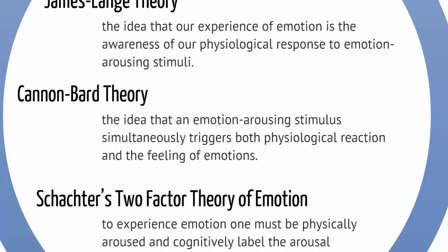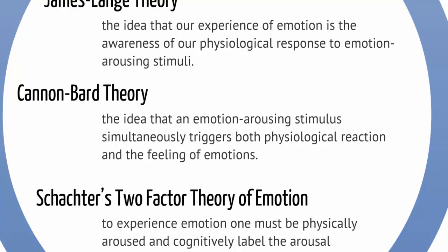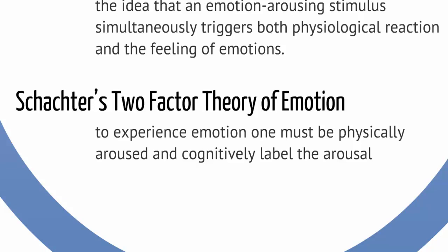The Cannon-Bard theory suggests that emotion-arousing stimuli simultaneously triggers our physical reaction and the feeling of that emotion. Schachter's two-factor theory of emotion says that to experience emotion, you have to have physical arousal and cognitively label that arousal. This means our body has a similar physical reaction for very different emotions — fear, anxiety, excitement, joy all cause an increased heart rate and breathing rate — so we have to cognitively label the emotion as what we have learned it to be.